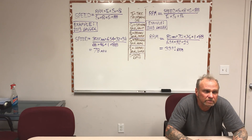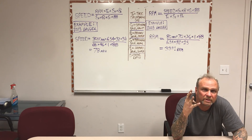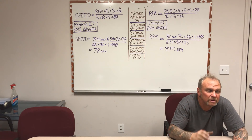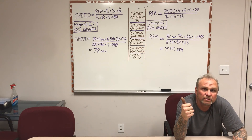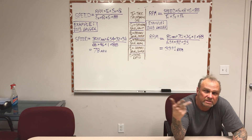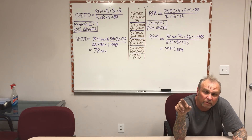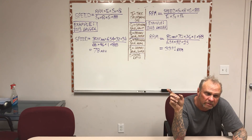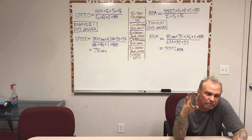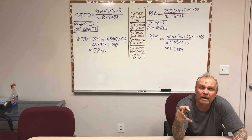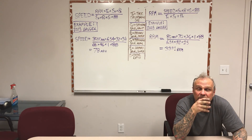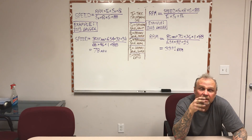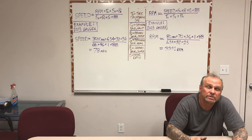All motorcycles in my book have four transmissions. Number one is the primary drive, number two is the transmission itself, number three is the secondary drive — in other words the power from the transmission to the rear wheel — and the fourth transmission is the rear tire diameter, because that diameter will significantly change the speed and RPM of your motorcycle.